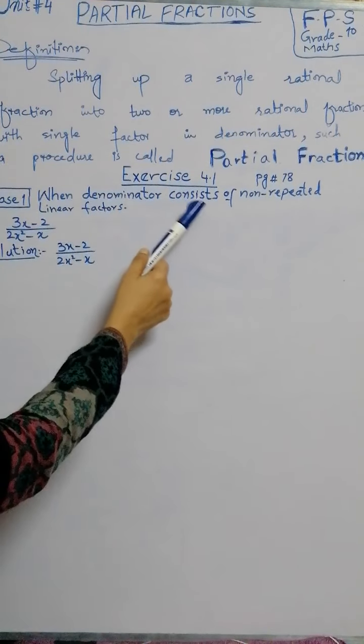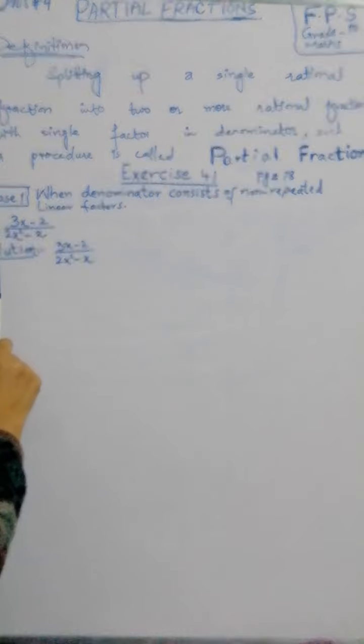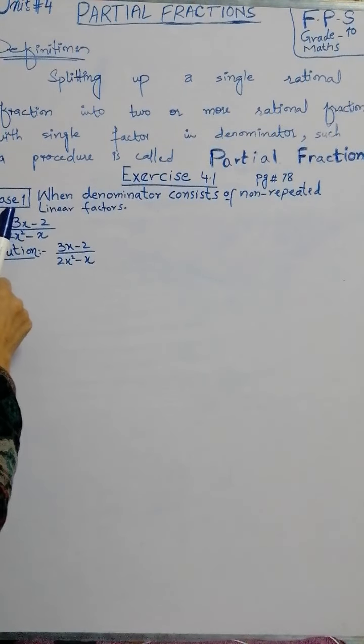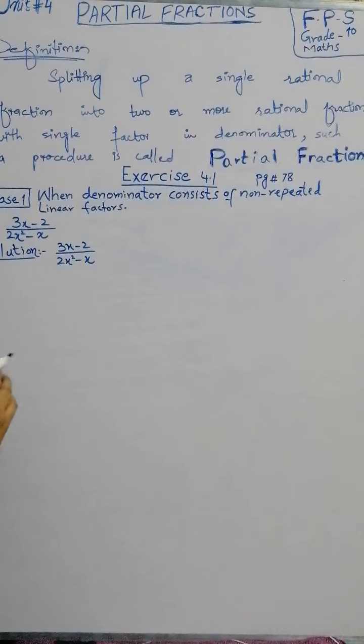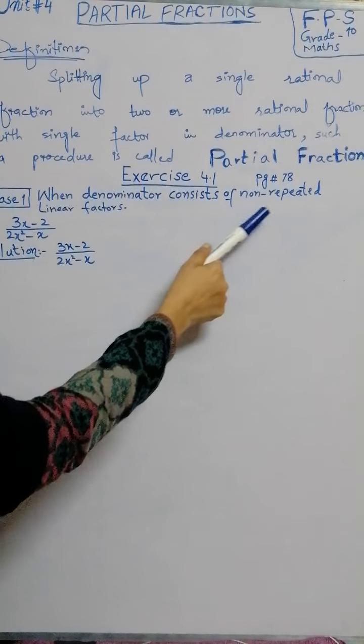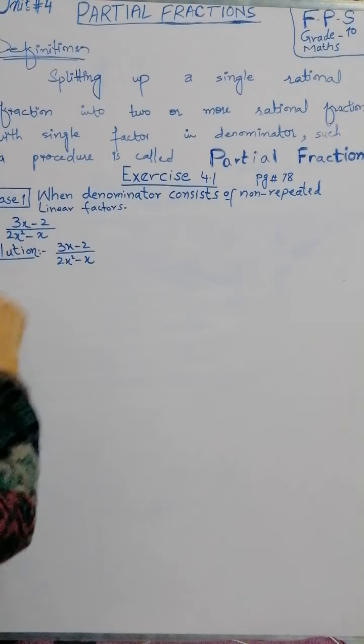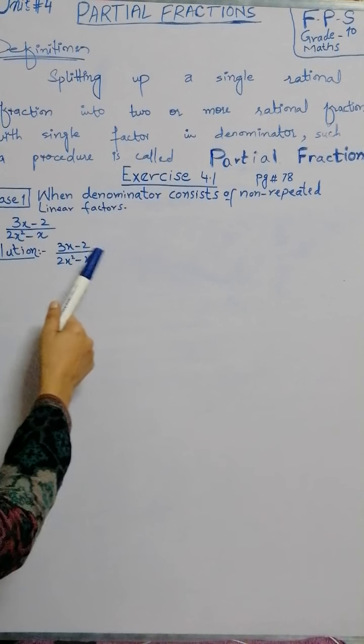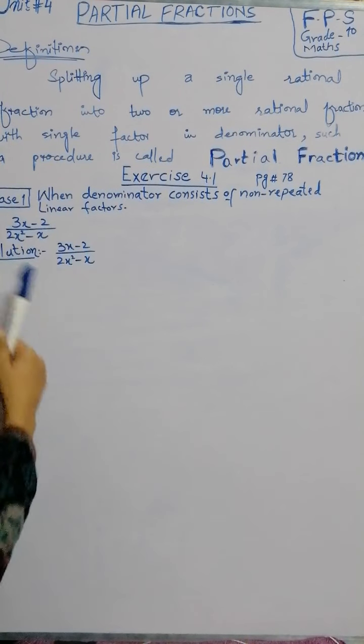Exercise 4.1, page 78: resolve into partial fractions. Now here we have case 1. Partial fractions has 4 cases. Case 1 is when the denominator consists of non-repeated linear factors. Here we have the denominator. In partial fractions we focus on the denominator.